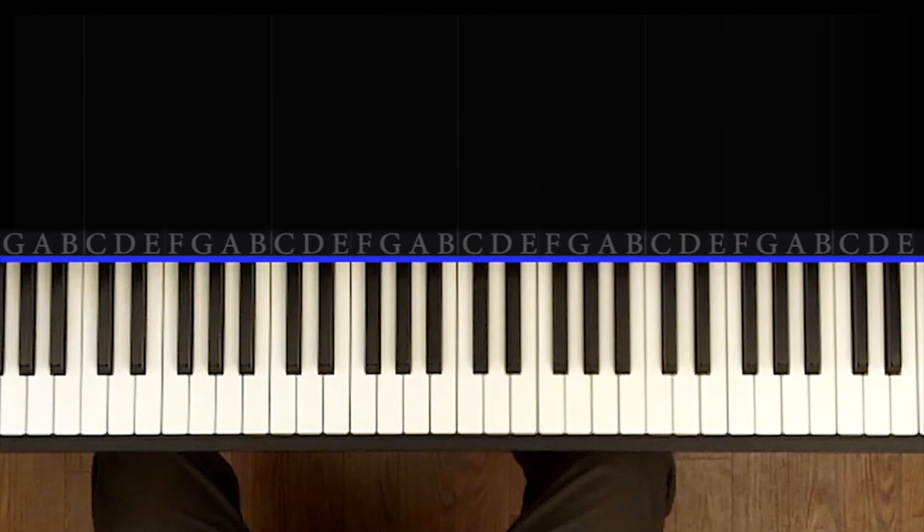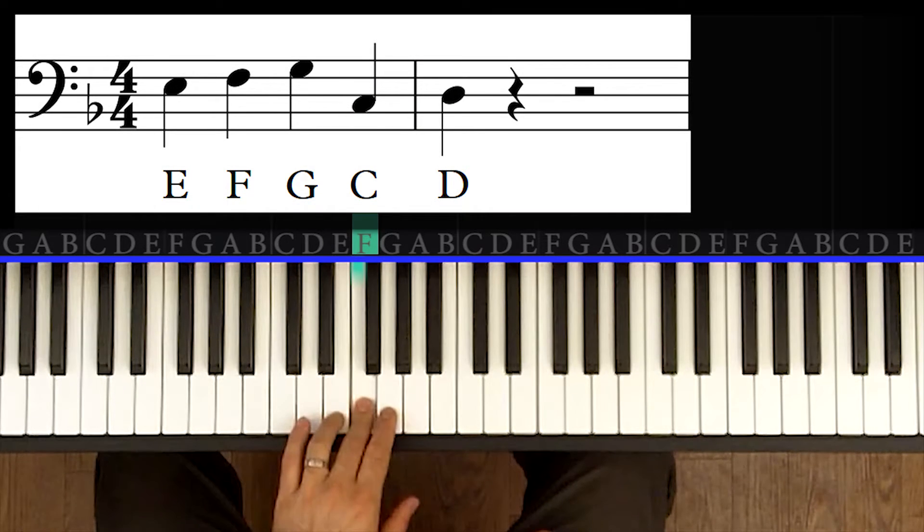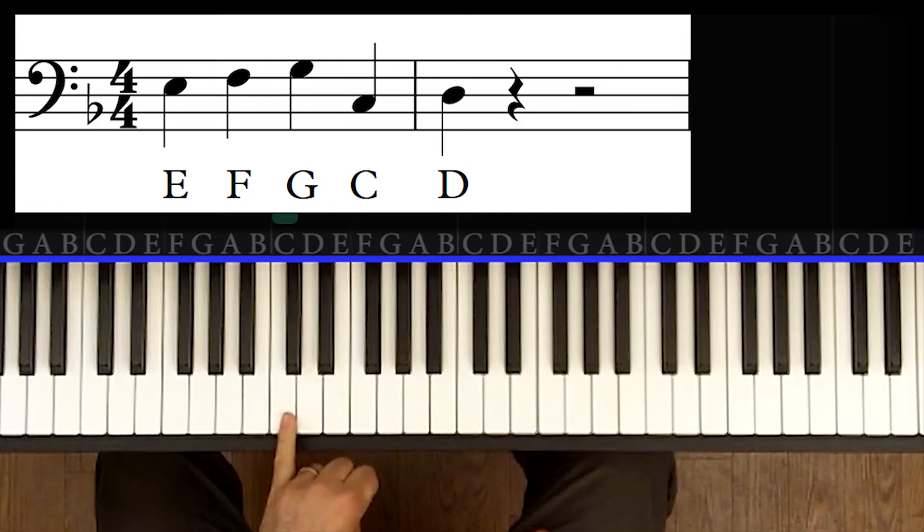Alright, we're adding a couple more notes to the bass clef, to our bag of tricks in the bass clef. We already know E, F, and G, these three notes, and we're going to add the two white notes that are to the left of that group. So this is D and this is C.